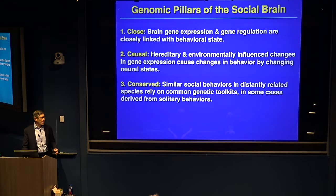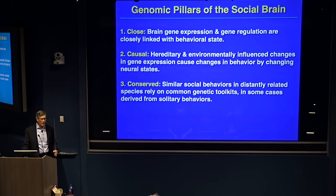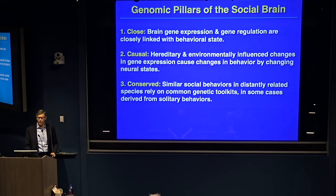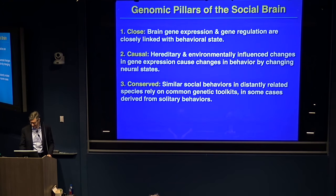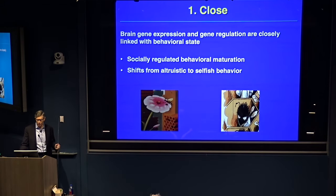Tonight we'll be talking about three genomic pillars of the social brain — the three C's: a close relationship, a causal relationship, and an evolutionarily conserved relationship. For each case, I'll summarize results from one to three studies to give you a feel for that. So, on to the first one: a close relationship.